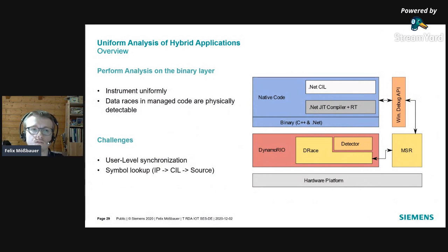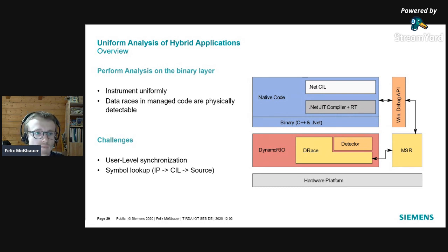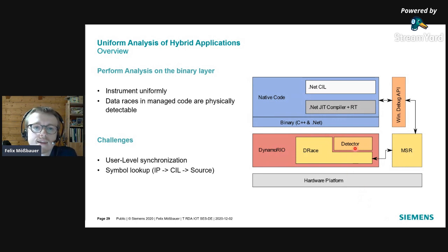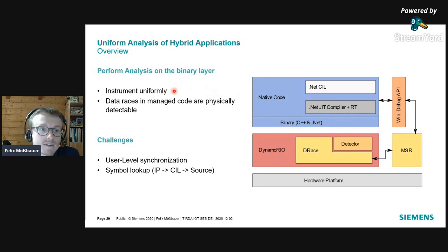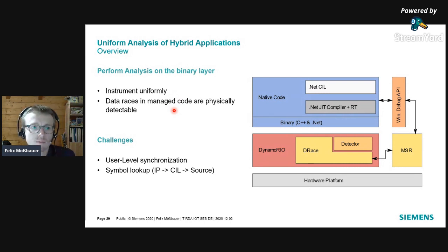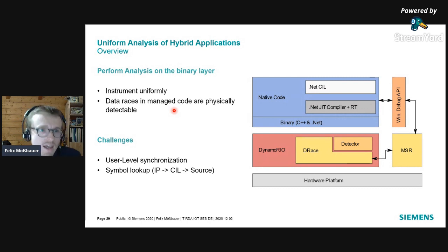D-Race also works for hybrid managed/unmanaged applications. For .NET managed applications, data race detection works exactly the same way — we instrument at the binary layer uniformly regardless of whether code is JIT-compiled or native. The master's thesis showed that data races in managed code are physically detectable by analyzing what the JIT compiler generates.